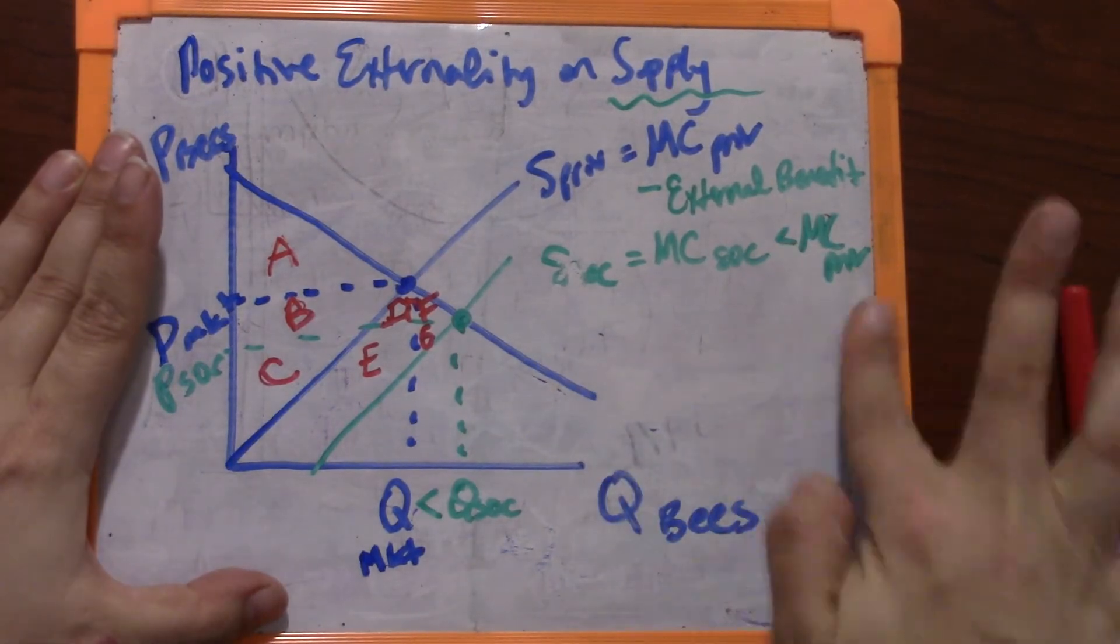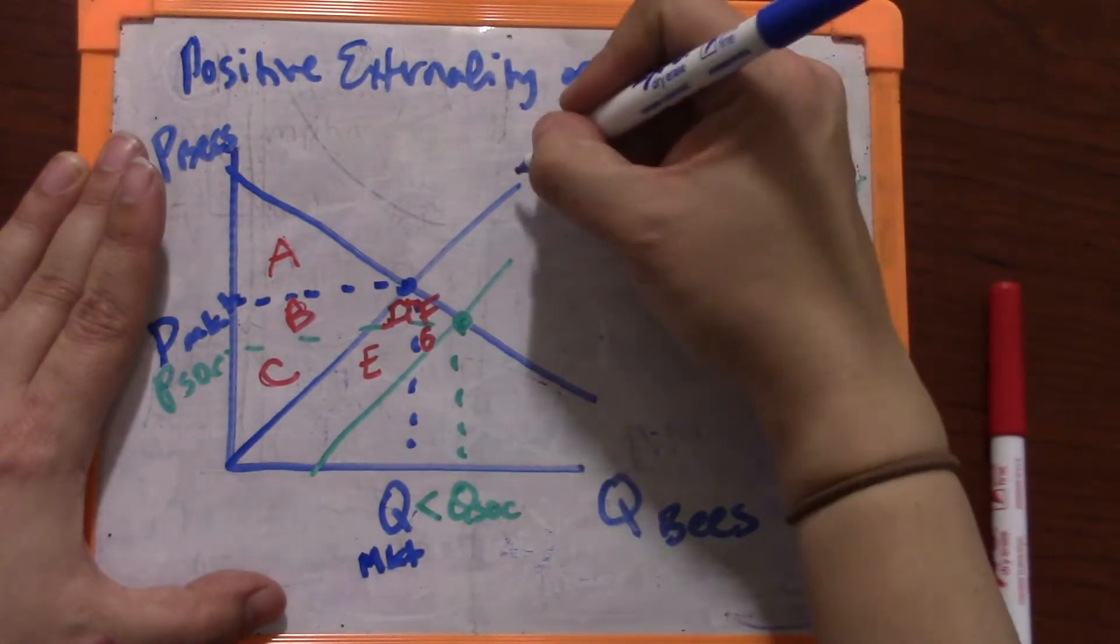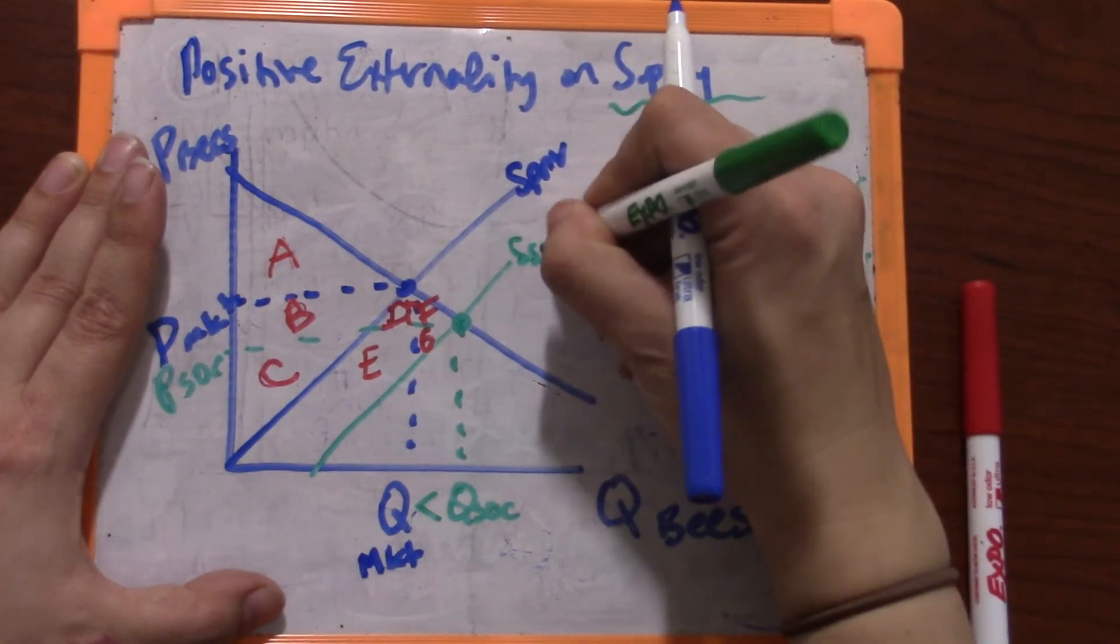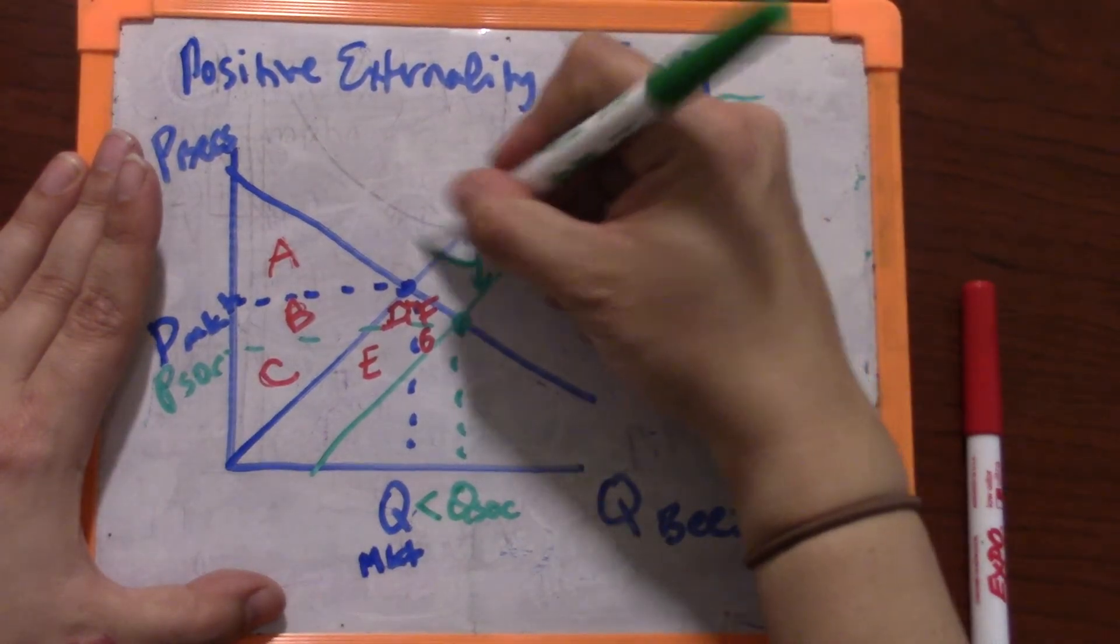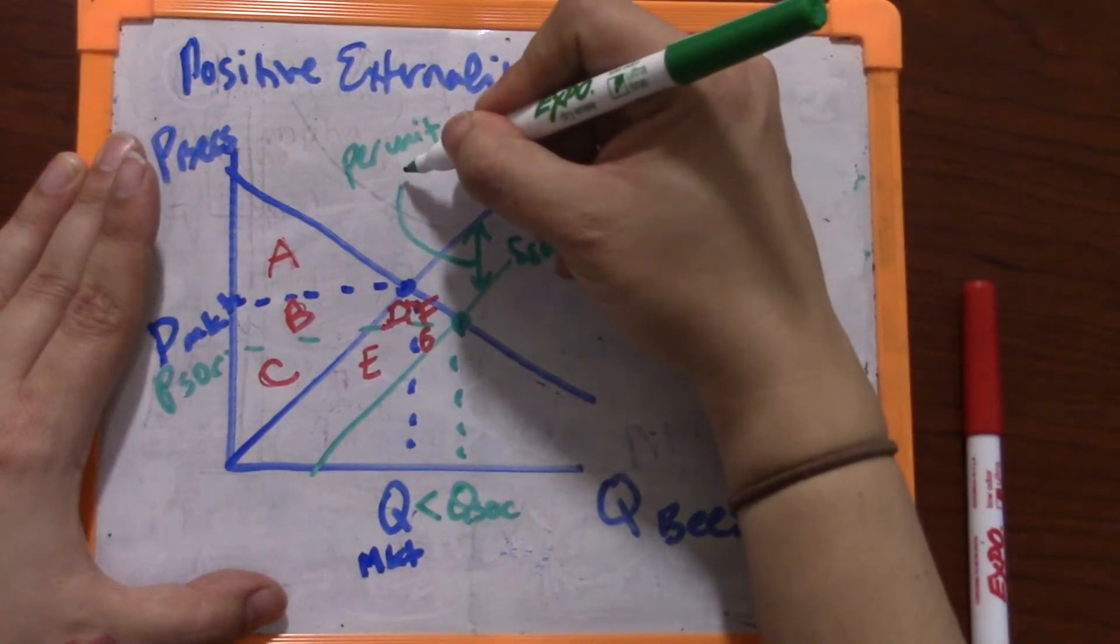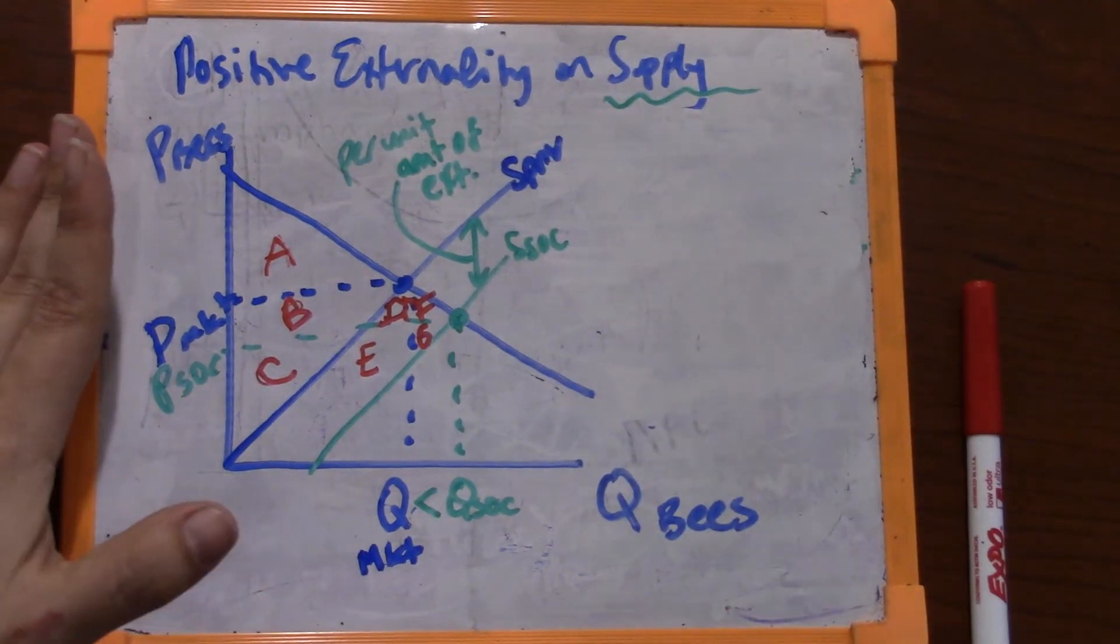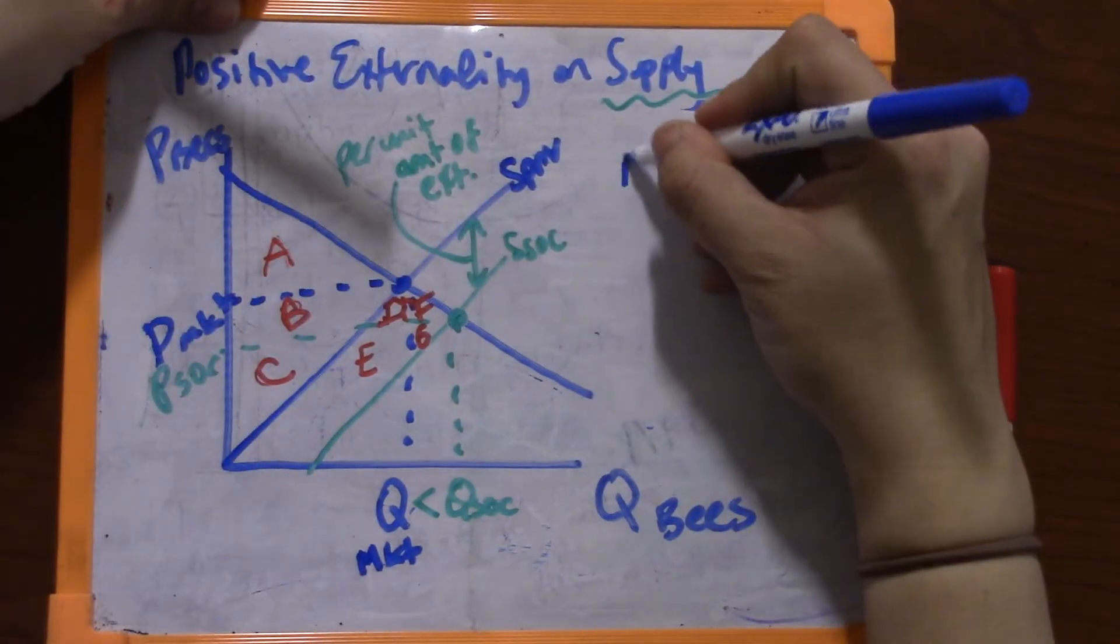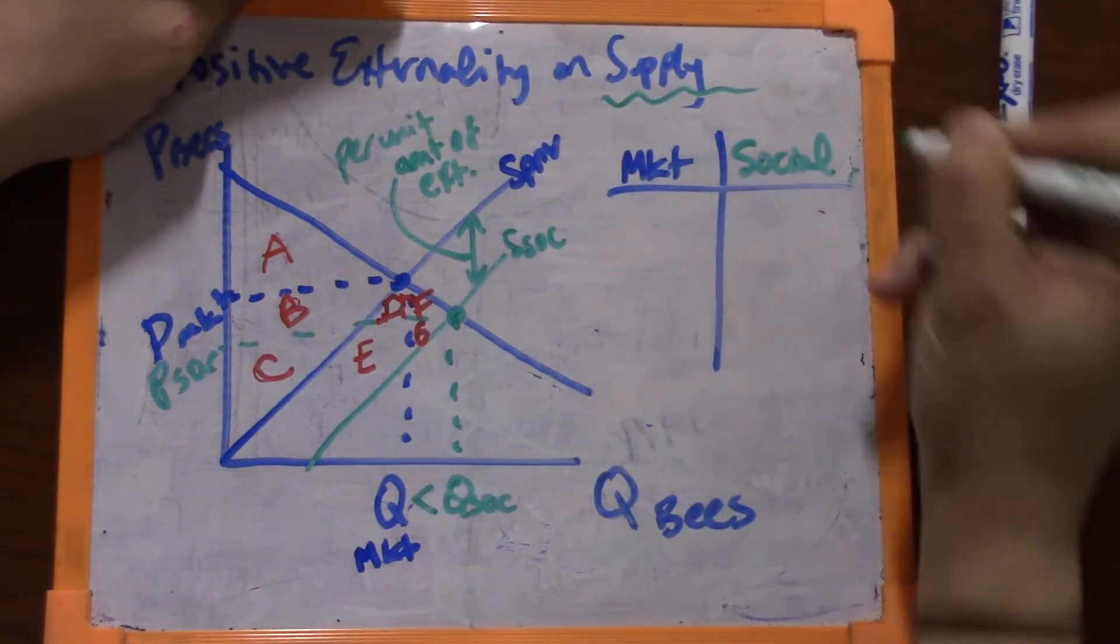Okay, I'm going to just erase this so that I have room to do my letters on the same tiny whiteboard, but this was private supply, socially optimal supply. Also one thing that we did not show is that the per unit amount of the externality is that vertical distance between the social supply curve and the private supply curve. So what the market will do on the left and what the social outcome will provide on the right.